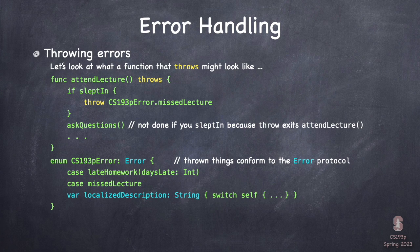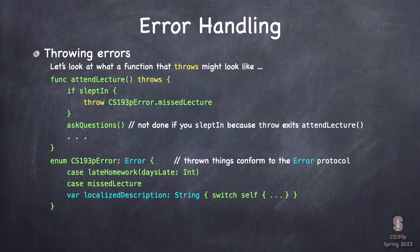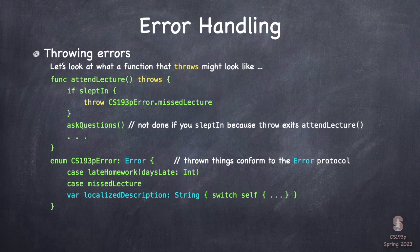Here's how you throw your own error. A function called attendLecture — if I slept in, I throw CS193pError.missedLecture and bail out, so the next line askQuestions never executes. CS193pError can be an enum or struct — usually enums — and it just has to implement the Error protocol. That just requires this one var, localizedDescription. You don't actually have to provide it, but you have to mark yourself with ': Error'. You can have as many cases as you want with associated data.